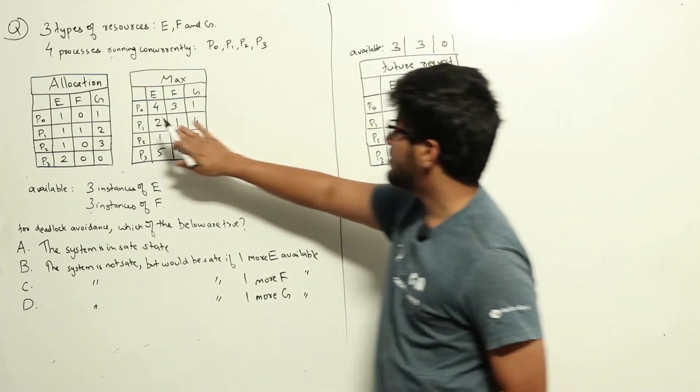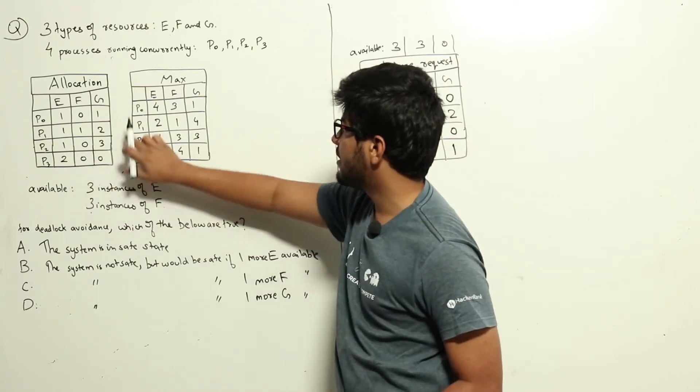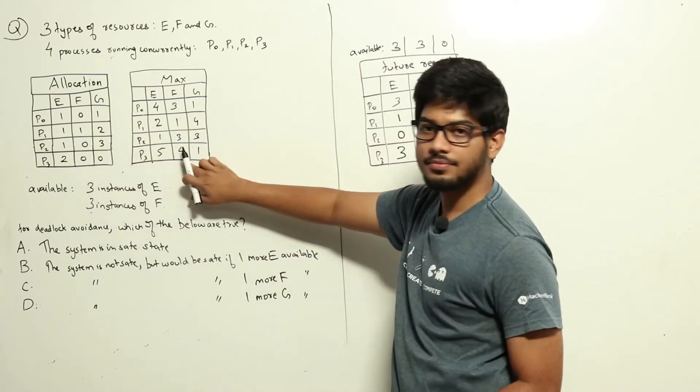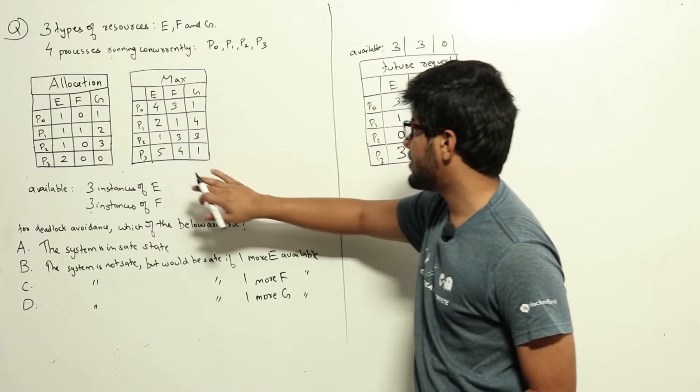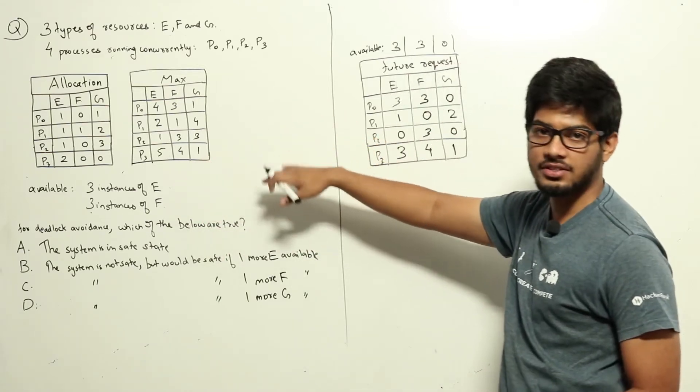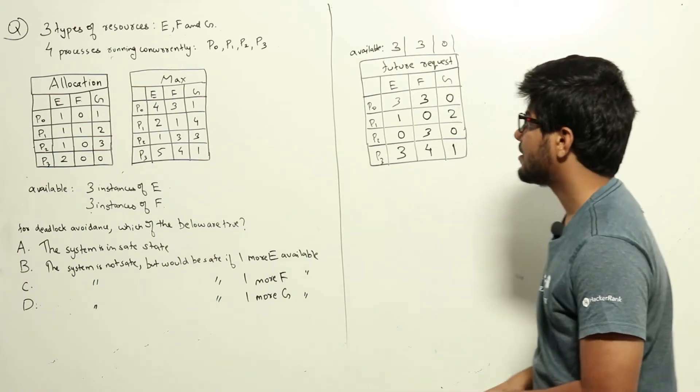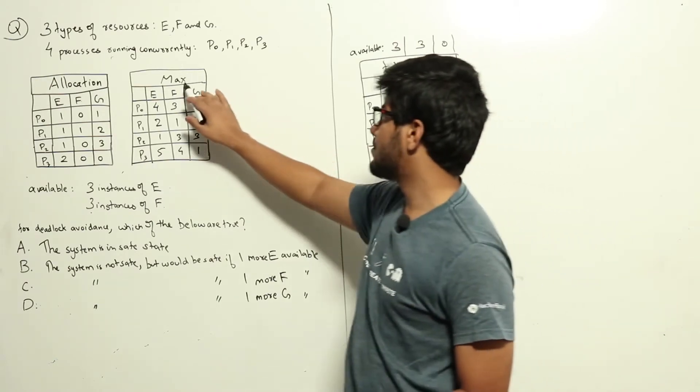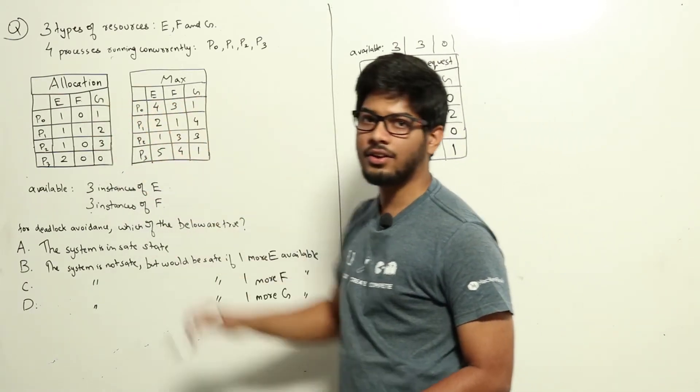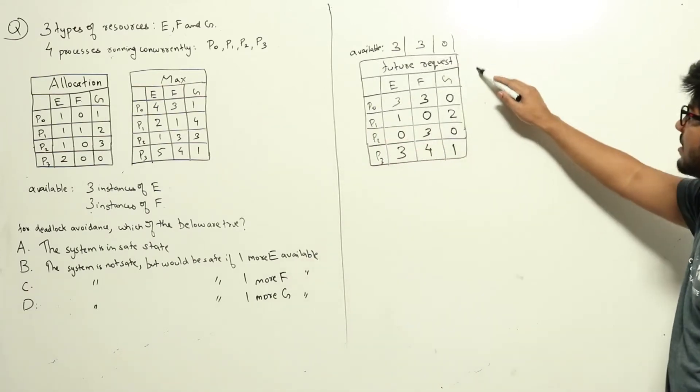We know this has been allocated currently and this is the maximum request which can happen. We will find out how many resources it can request in the future. That is maximum resource request minus currently allocated ones. That matrix I have drawn here.